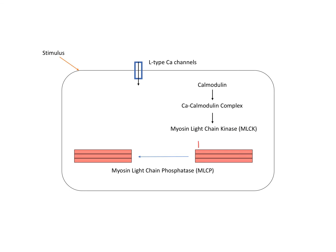Now I will draw it again. We have a phosphorylated myosin light chain and this smooth muscle is contracted right now. How will it be relaxed? This pathway starts with nitric oxide. The stimulus for relaxation is nitric oxide, which comes from adjacent tissues. Nitric oxide increases cyclic GMP.